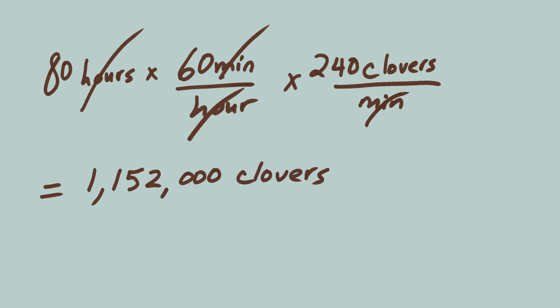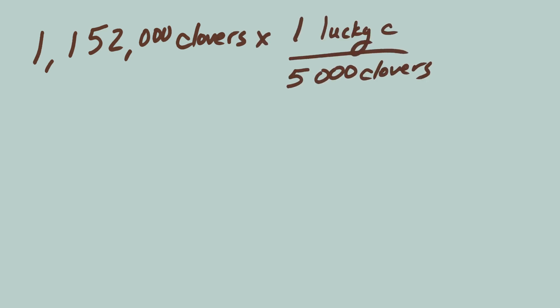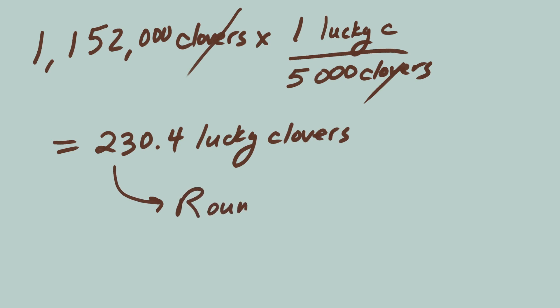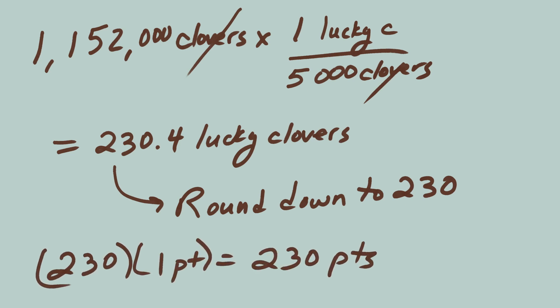How many of those clovers do you expect to be lucky? Odds are, 1 in 5,000 of them will be a four-leaf clover. 1,152,000 clovers times 1 lucky clover per 5,000 clovers, which equals 230.4 clovers. It's not possible to find 0.4 of a clover, so you round down to 230 lucky clovers, which earns you 230 points.